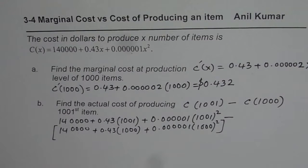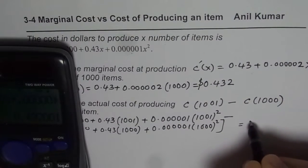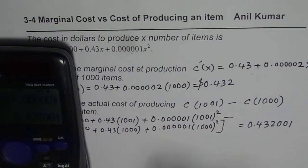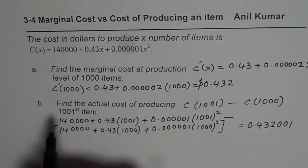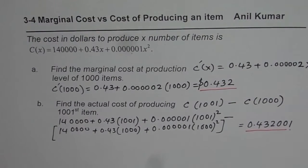So this is 0. So let me begin from here and use the calculator to find the answer. So what we have here is 0.43 times 1001 plus 0.000001 times 1001 square. So what we get here is a value which is equal to 0.432001. So that is the cost which we get for producing 1001st item. And you can compare and see how close it is.